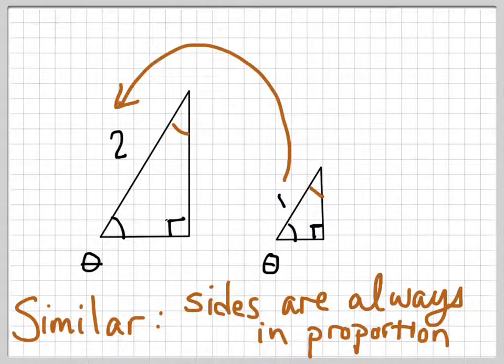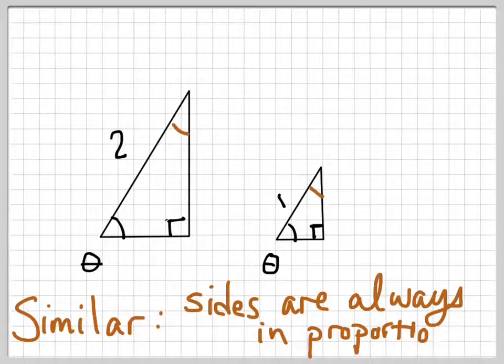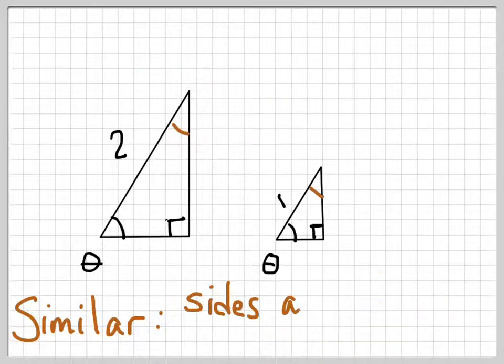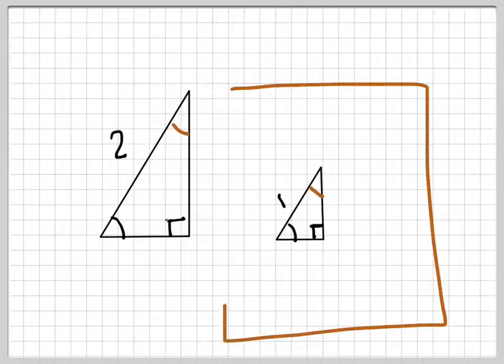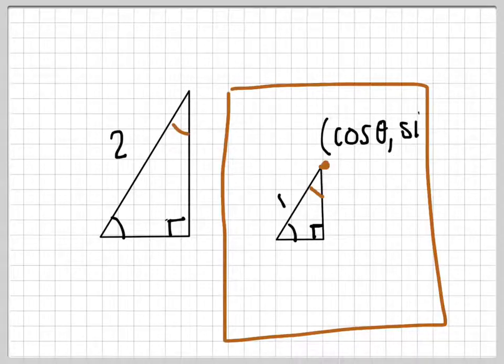What does that mean? Well, if I go back and clear up some space here, these two triangles are in proportion. This little triangle here was in my unit circle. That meant that this point up at the top had very specific values. The x-value was cosine of theta, and the y-value was sine of theta.